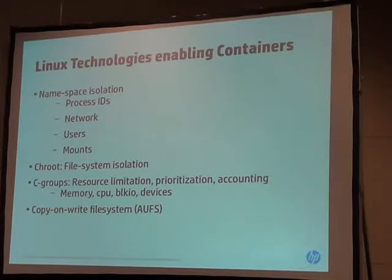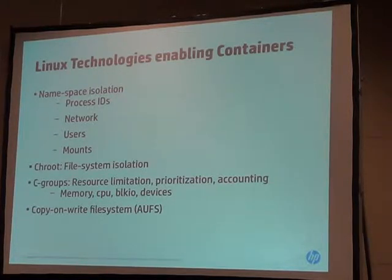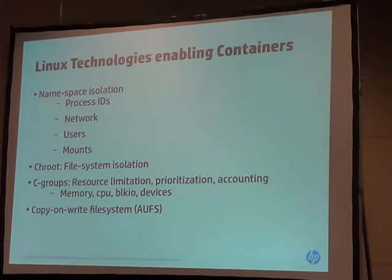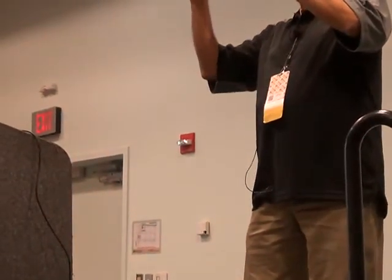Some implementations of container technology, specifically Docker, rely on something called a copy-on-write file system. So if there are two containers that are perhaps sharing the same file system — or say the host OS and the container sharing the file system — there aren't two copies of that file system. There's one, but when one is changed, only the files that get changed are kept in the copy-on-write file system, so file system space is efficiently allocated.